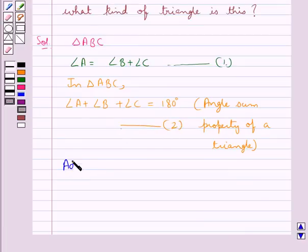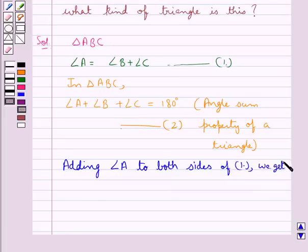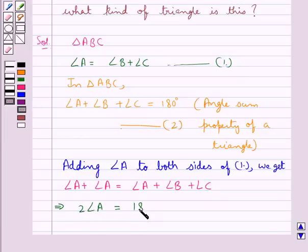Adding angle A to both sides of equation 1, we get angle A plus angle A is equal to angle A plus angle B plus angle C. That is, 2 times angle A is equal to 180 degrees.